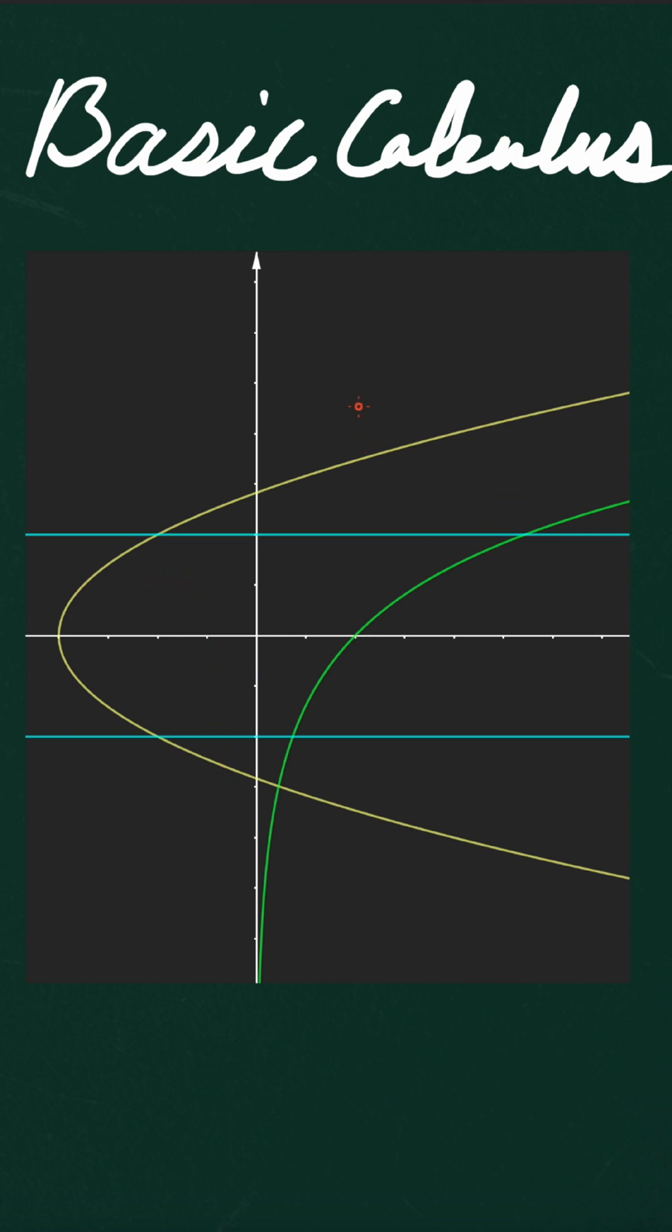The first one is the graph of the function x = y² - 2. The green one is x = e^y.